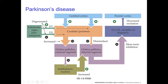What happens is that the substantia nigra pars compacta is not transmitting dopamine to the corpus striatum — the caudate and the putamen. So it's not releasing dopamine to D1 receptors of the direct pathway, and it's not releasing dopamine to D2 receptors of the indirect pathway. Without dopamine stimulating the D1 receptors, the direct pathway won't be enhanced, leading to slow function of the direct pathway and hypokinesia.